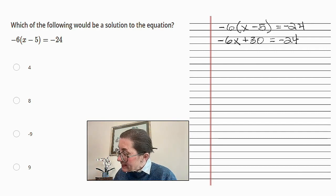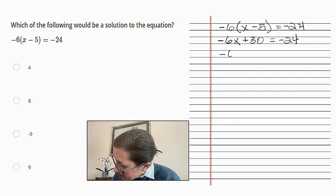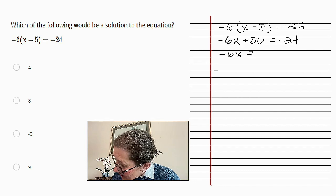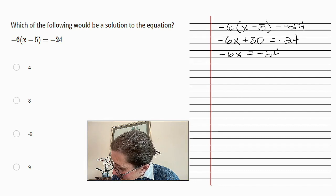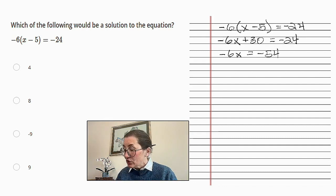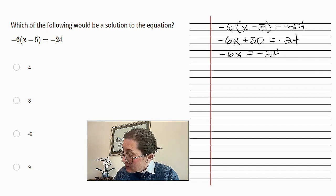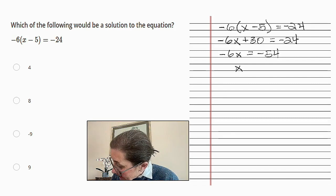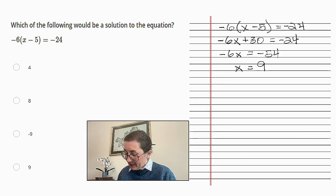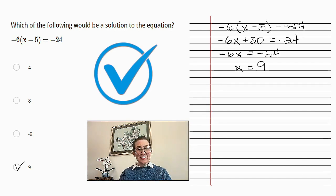Now we're going to take 30 from each side, so we get -6x equals -54. Now we're going to divide each side by -6, so we're going to end up with x equals 9. And there you have it.